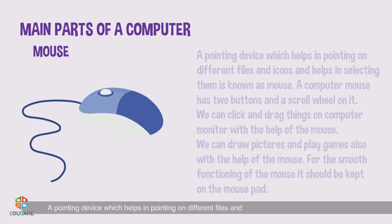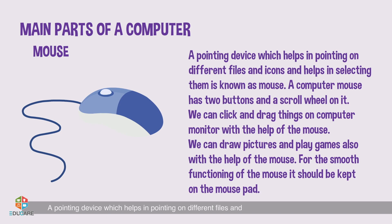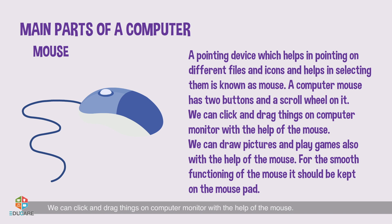Mouse. A pointing device which helps in pointing on different files and icons and helps in selecting them is known as a mouse. A computer mouse has two buttons and a scroll wheel on it. We can click and drag things on the computer monitor with the help of the mouse. We can also draw pictures and play games with it. For smooth functioning, the mouse should be kept on a mouse pad.